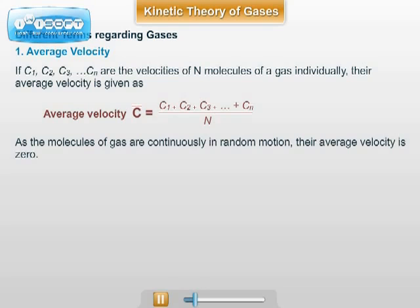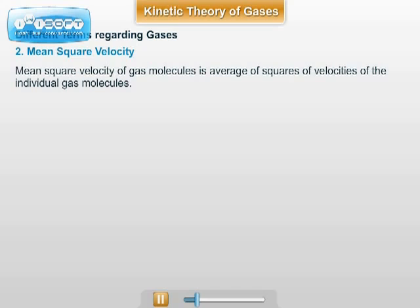Hence, mean square velocity of the gas is calculated. Mean square velocity of gas molecules is the average of squares of velocities of the individual gas molecules. It is denoted by C² bar. C² bar equals C1² plus C2² plus C3² plus dot dot dot plus Cn² whole divided by N. But the unit of mean square velocity will be meter square per second square, and the unit of velocity should be meter per second.